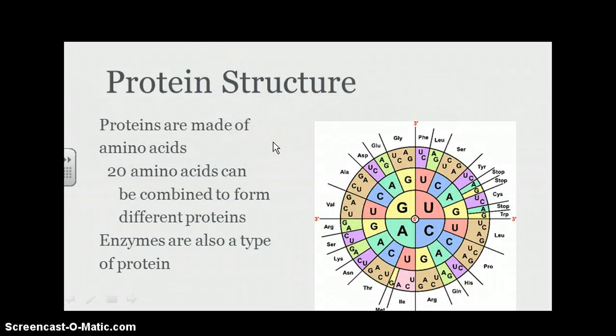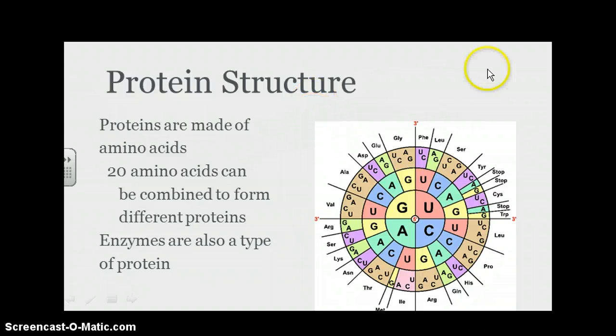Proteins are made up of amino acids, and there are 20 amino acids. They can be combined in lots of different ways to form different types of proteins. This is a chart that gives an example of the different types of proteins made from these amino acids, and we'll talk about that more in class too. Enzymes are also a type of protein. If you think back to our chemistry unit, what exactly are enzymes? If you don't remember, it might be a good time to look.